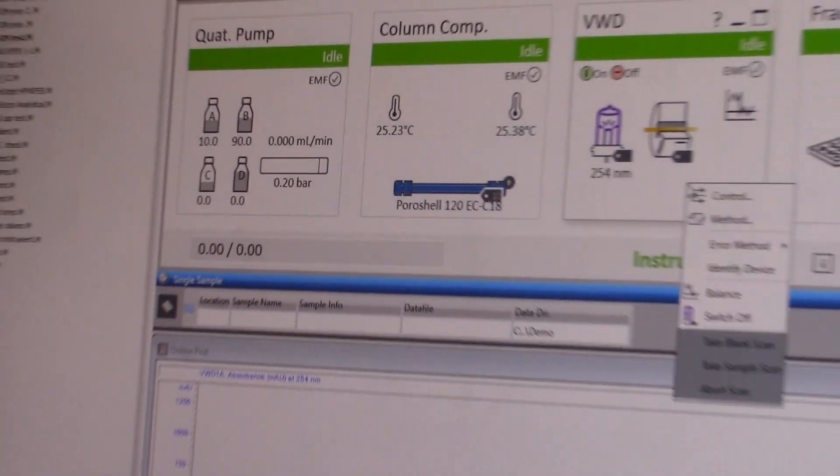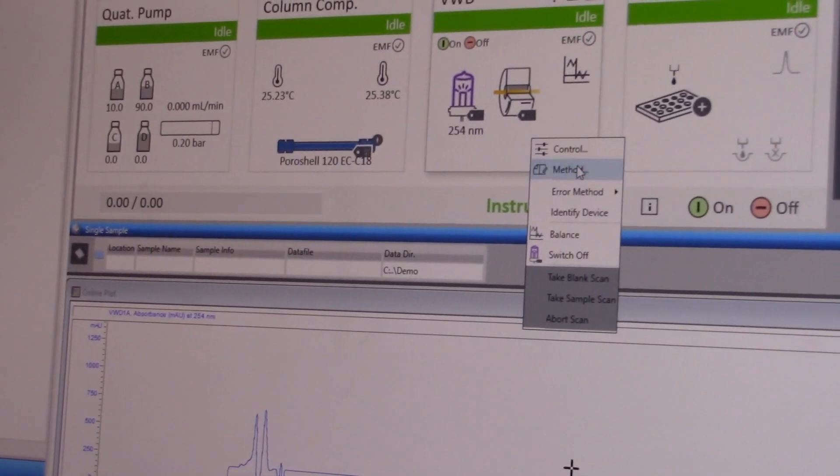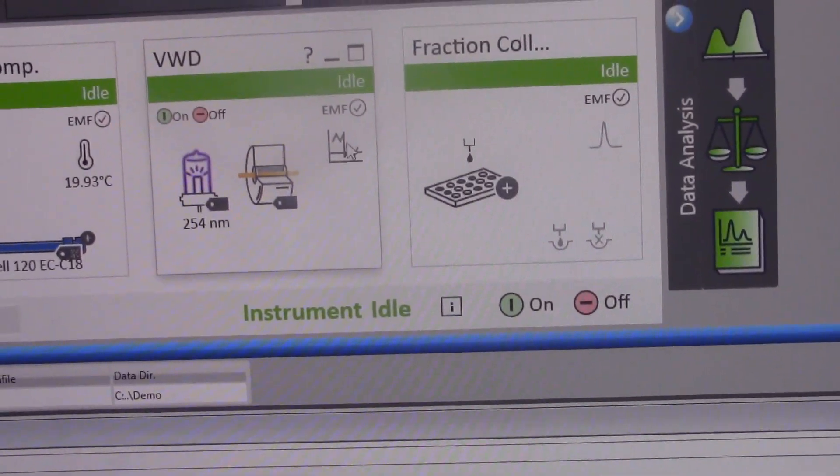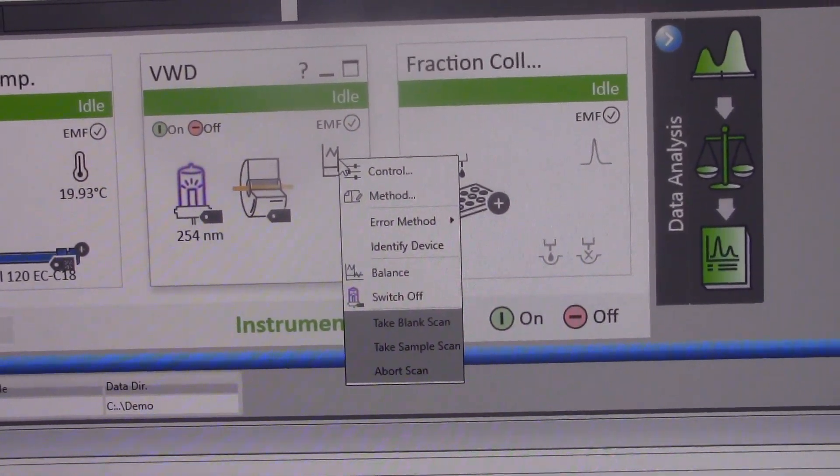In this next panel, you can change the wavelength by right-clicking and selecting methods. Make sure you have the correct wavelength for your sample detection. You can also balance your graph here.